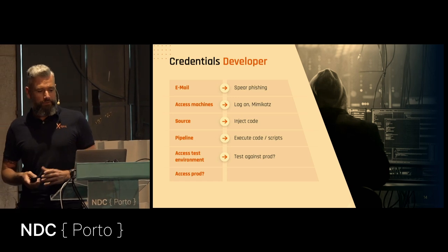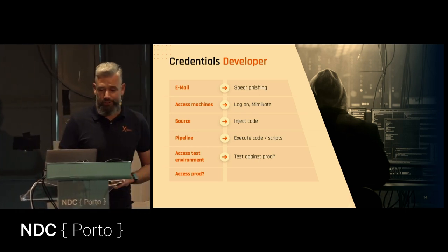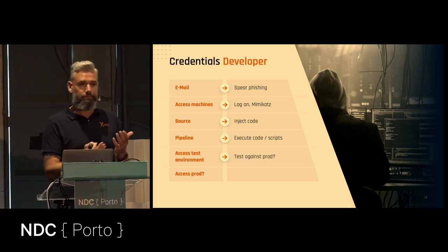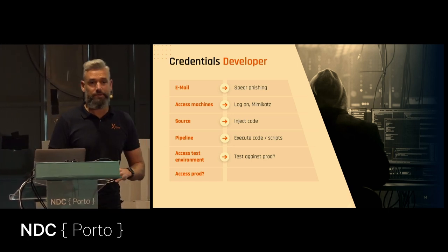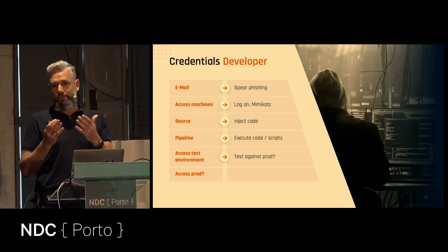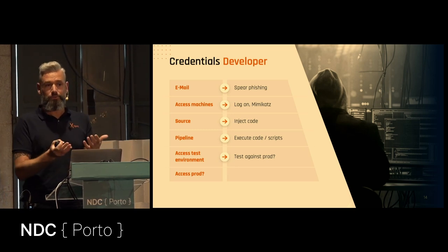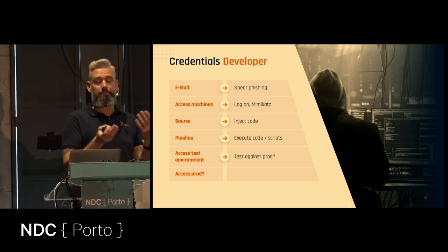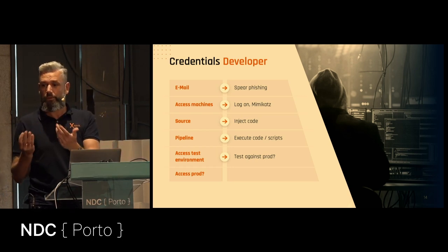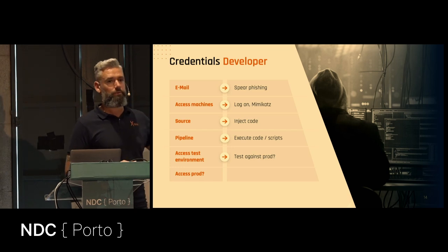So what can you do if you have the credentials of a developer? You can spear-phish other people. Phishing can be from an anonymous address, but if you once have leaked credentials in your company, you can spear-phish someone else. If the entry desk person at your company gets breached and sends you a phishing mail, it's from an internal address and people will click on it. If you as a developer send an email to an admin, the chance he clicks on it is pretty good because he thinks, 'It's another engineer.' Spear phishing is a very powerful tool to get from one victim to the next.